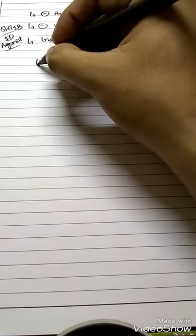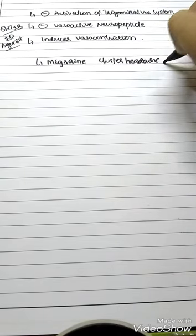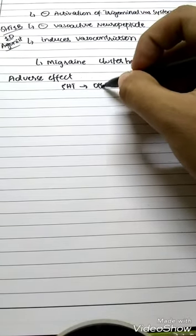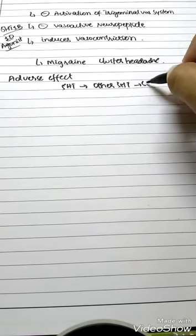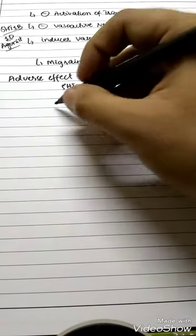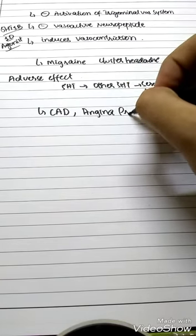Okay guys, now look at the adverse effects. We know the use is migraine and cluster headache. Of course it is 5-HT, so if we give it along with other 5-HT drugs, it causes serotonin syndrome. And it is inducing vasoconstriction, so we should avoid this drug in coronary artery disease and the angina, angina of Prinzmetal, which is due to the vasospasm.